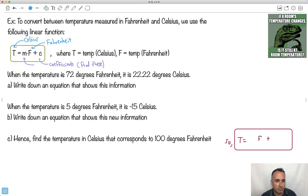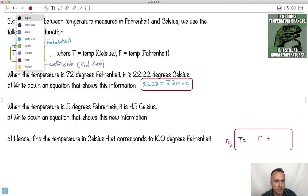So we're told some data here. When the temperature is 72 degrees Fahrenheit, it's 22.22 degrees Celsius. We're supposed to write down an equation that shows this information. All we have to do is write it in this form. So we have 72 degrees Fahrenheit, that's this one here. And I have 22.22 as degrees Celsius, that's this value. So I can make myself a little equation: 22.22 equals m times 72, or 72m plus c. But I don't know anything else about this, I'm kind of stuck now. I'll maybe put this here as an answer, and I'll call this equation 1 so I can keep track of what's what.